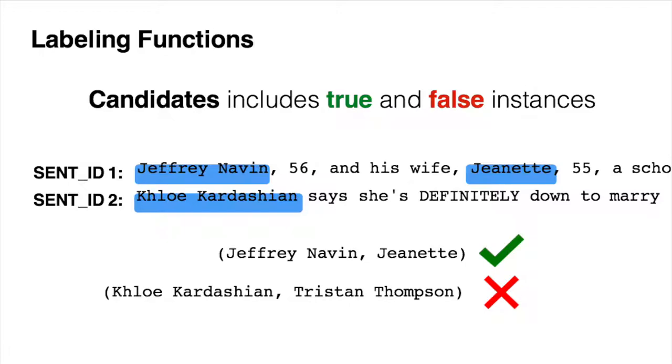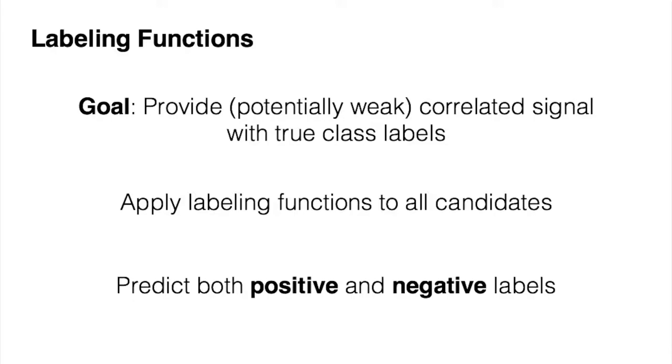We want to write a collection of labeling functions that vote both true and false. They cover both the negative cases and the positive cases, right? So in this sentence, as you guys pointed out earlier, his wife, that's a strong clue that these two people names are, in fact, reflect a true spouse relation. While, Khloe Kardashian says he's definitely down to marry, blah, blah, blah. This would indicate that in this case, it's not a true marriage relation. And you need to capture both sides of the coin when writing labeling functions, right? Both positive and negative supervision. And your just general goal is to provide potentially weak correlated signal with the true class labels, right? You could think of this as layering some notion of a prior over your feature space. But generally, it's finding some collection of correlated bits of information that you can inject into the model using labeling functions. Again, to provide both positive and negative supervision.